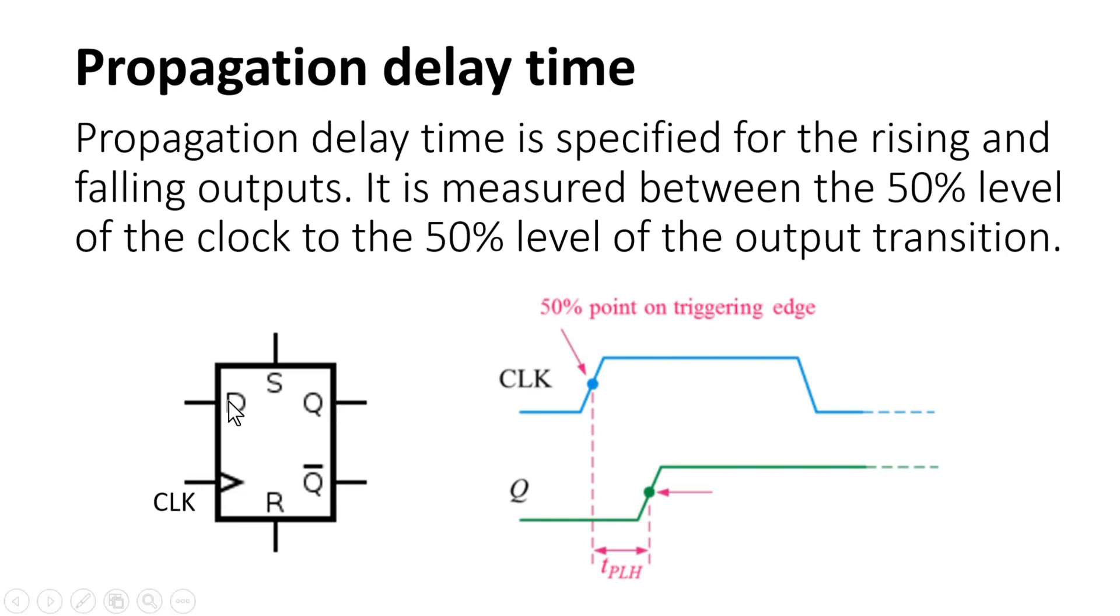Because, for example, if you apply D input at this point in time in the clock region, it will not be propagated to Q until there is a positive edge on this clock. So the actual D is transmitted to Q whenever there is a positive edge on the clock.